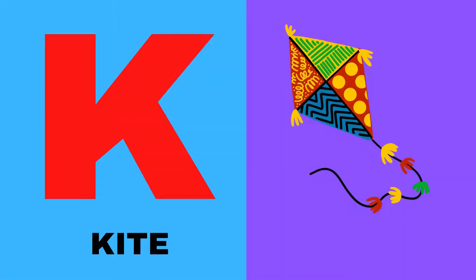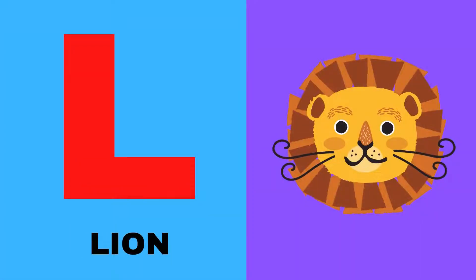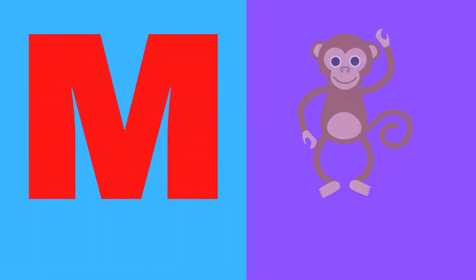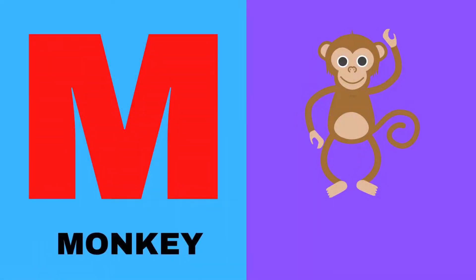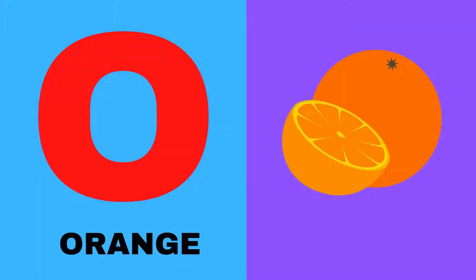K for kite, L for lion, M for monkey, N for nest, O for orange.